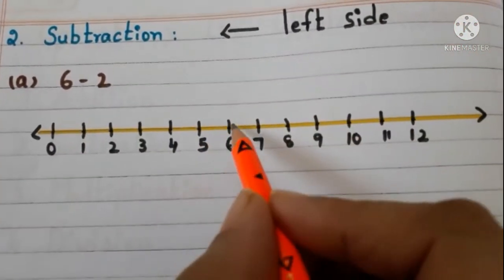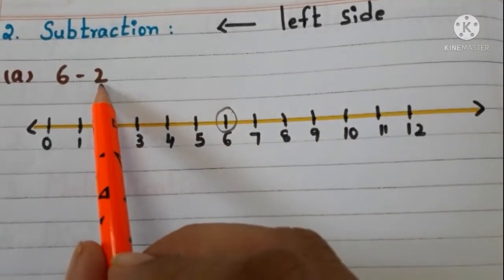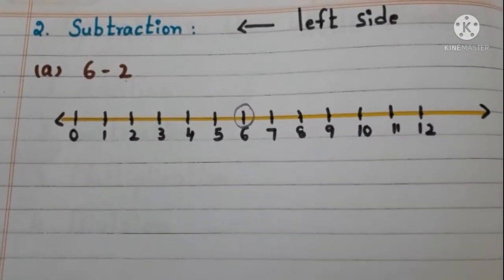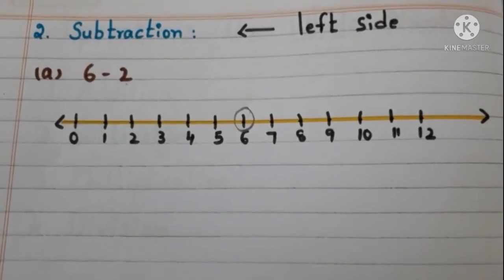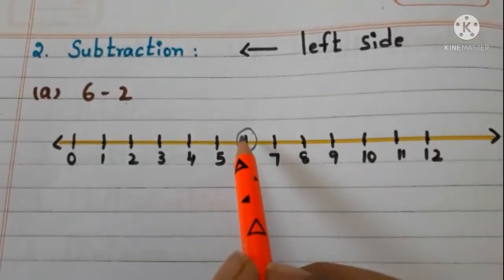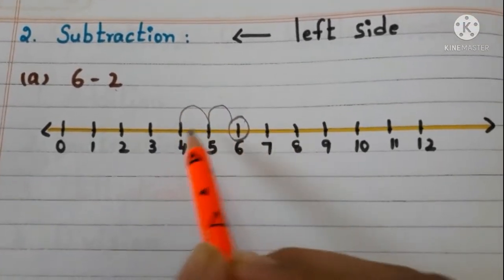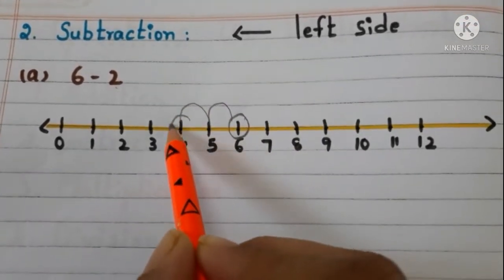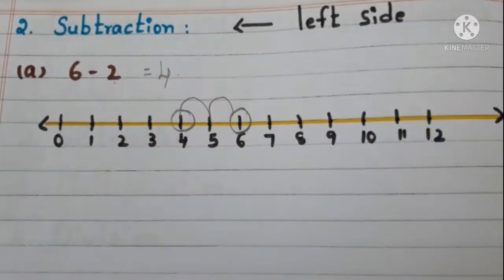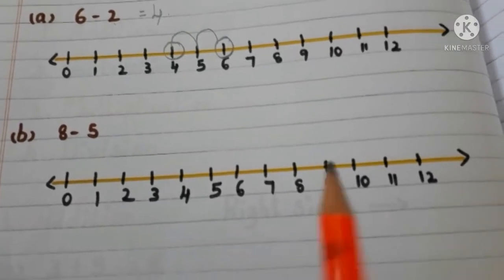What is the second number? 2, right. So we have to move two steps to the left side on the number line. See: 1, 2. So the answer is 4.